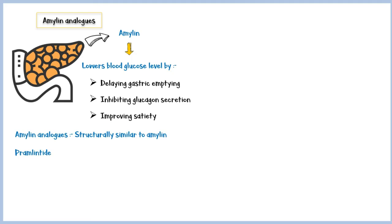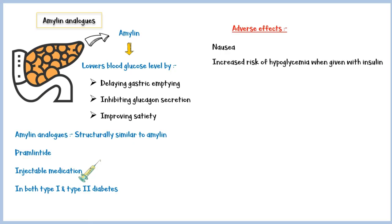Unlike the other drugs we've discussed so far, pramlintide is an injectable medication, not an oral one. And it can be used to treat both type 1 and type 2 diabetes. Common adverse effects include nausea and increased risk of hypoglycemia, especially when taken with insulin.